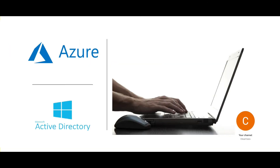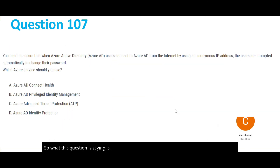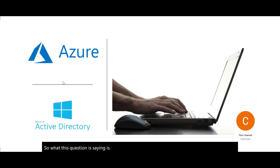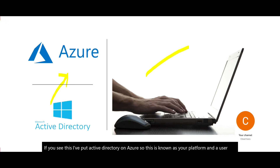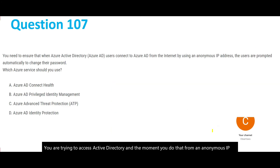This question describes a user who is an Active Directory user on the Azure platform. A user with an anonymous IP is trying to access Active Directory. Even if you are a valid user, the moment you attempt access from an anonymous IP, you should get a prompt to change your password.